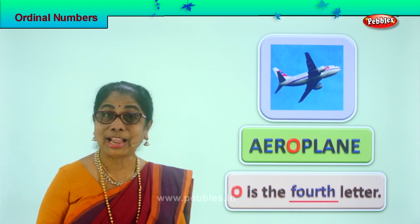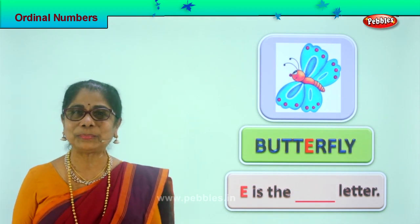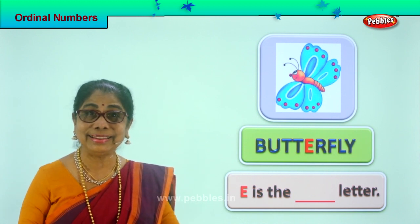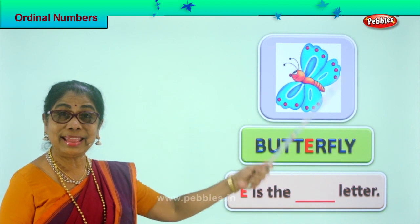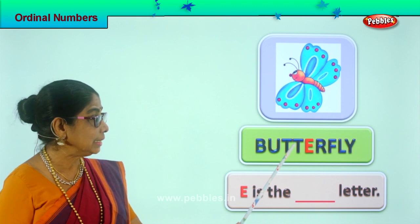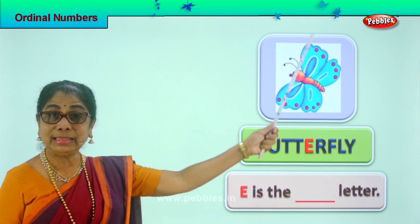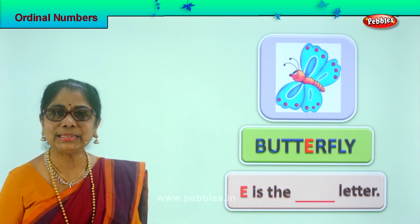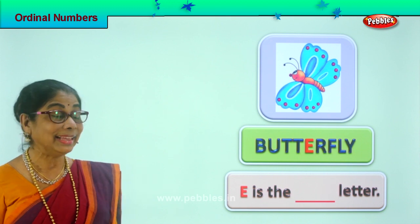Shall we go to another picture? Are you enjoying it? Good. Look at what you have — have you seen this? In the garden there are flowers and butterflies. Spell butterfly: B-U-T-T-E-R-F-L-Y. Here is the butterfly, here is the spelling. Which letter is colored? Red letter E.